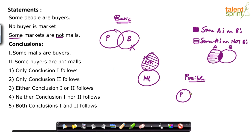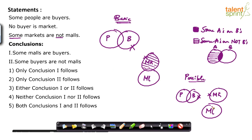Some people are buyers — straightforward, no problem. No buyer is market — draw them separate. Some markets are not malls. We can draw malls in this way also — nothing wrong. Some markets are not malls; even this diagram is correct. It follows the given statements. I can say all these markets are not malls. So the point is: some markets are not malls does not mean that some markets have to be malls.